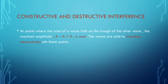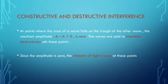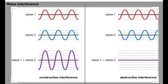At points where the crest of a wave falls on the trough of the other wave, the resultant amplitude is A minus A, which equals zero. The waves are said to interfere destructively at these points. Since the amplitude is zero, the intensity of light is zero at these points.